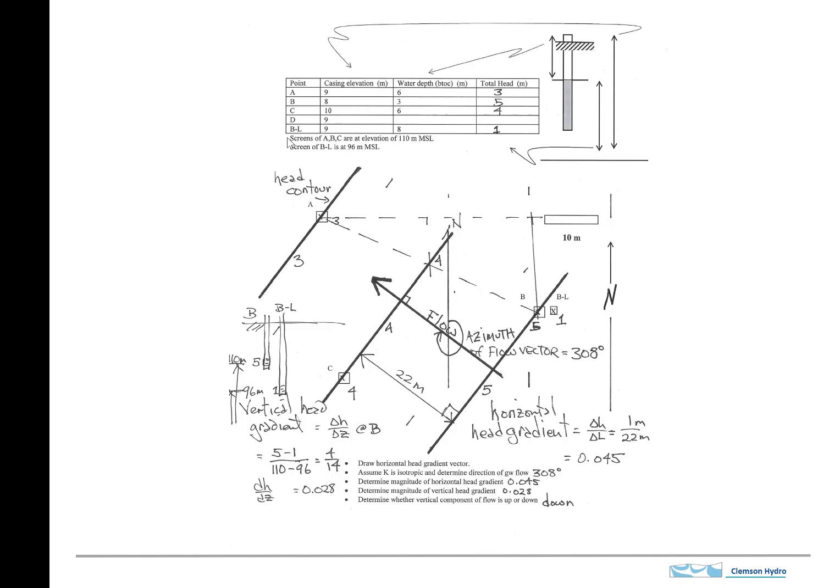And what I'm showing up here at the top is a table where you have the casing elevation and the depth to the water. And you're going to use this information to determine the total head. So casing elevation, this is determined by surveying.